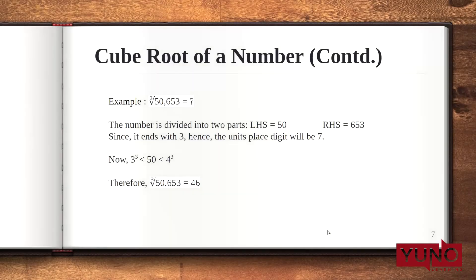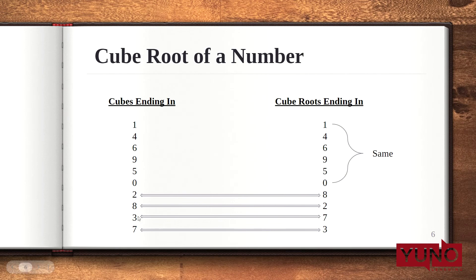Let's see an example. We need to find the cube root of 50,653. The difference here is that while partitioning the number from the right-hand side, the right-hand side will have 3 digits. So the RHS is 653 and the remaining digits, 50, is the left-hand side. The cube is ending with 3, which means the cube root will end with 7. We get this from the table: if the cube is ending with 3, the cube root will end with 7.